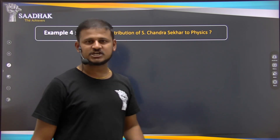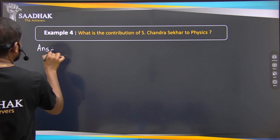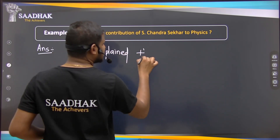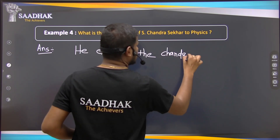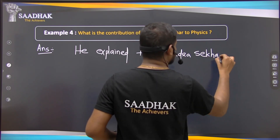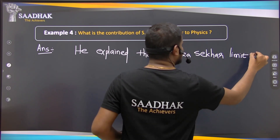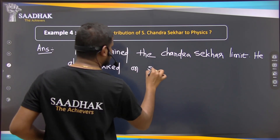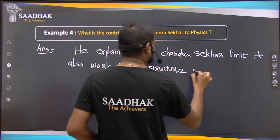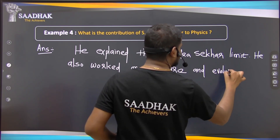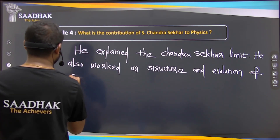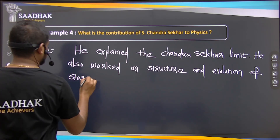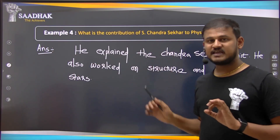Fourth question: What is the contribution of S. Chandrasekhar to physics? He explained the Chandrasekhar limit. He also worked on the structure and evolution of stars. This is the contribution of S. Chandrasekhar to physics.